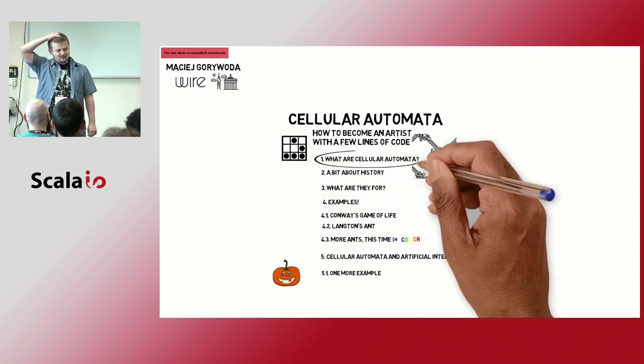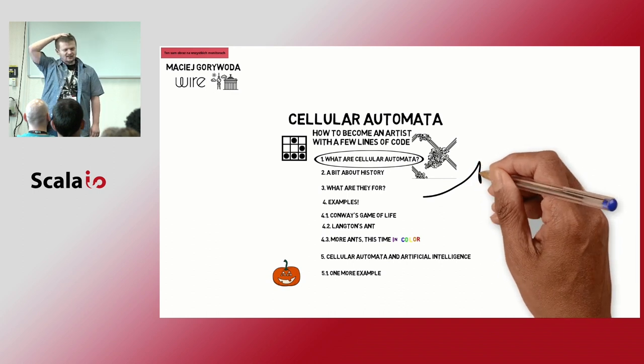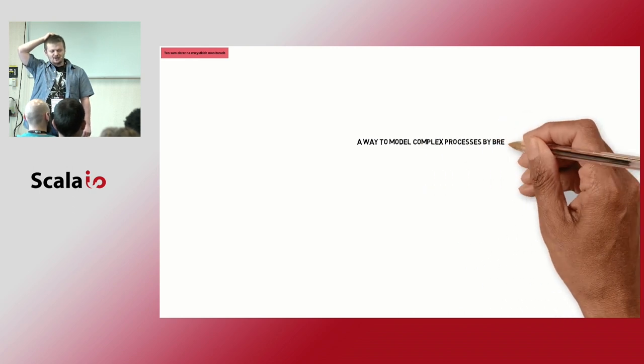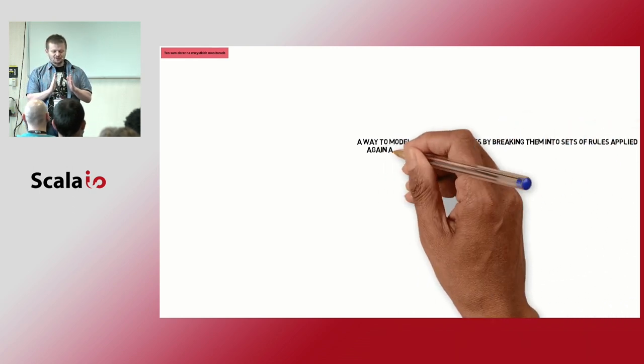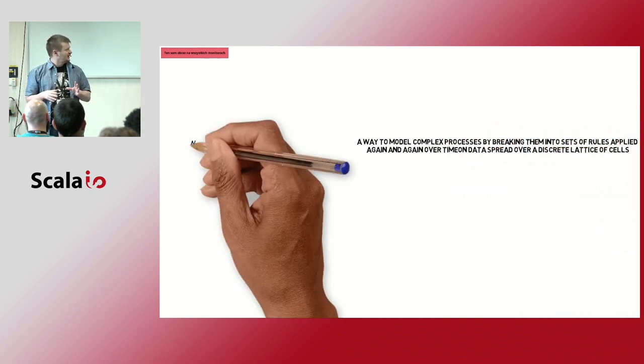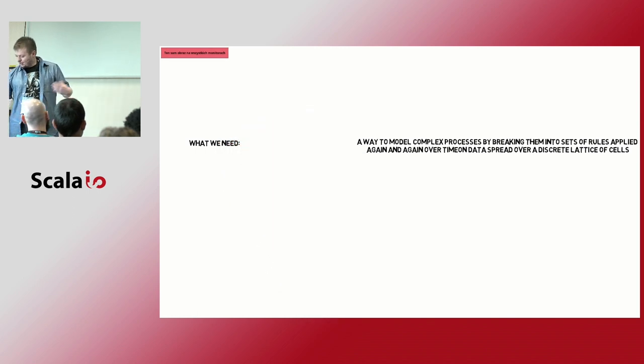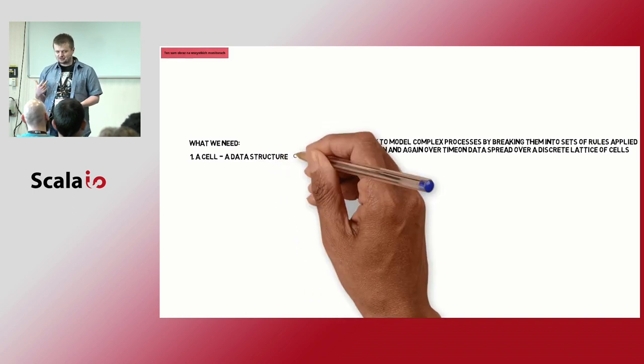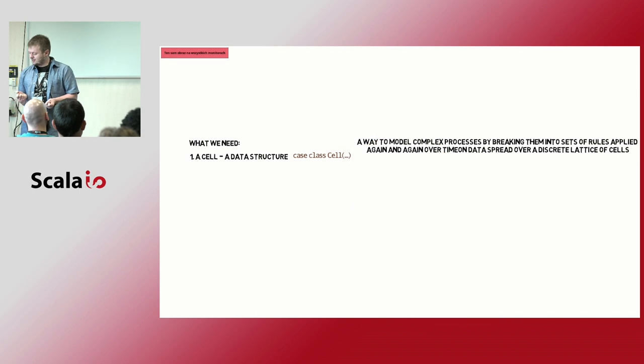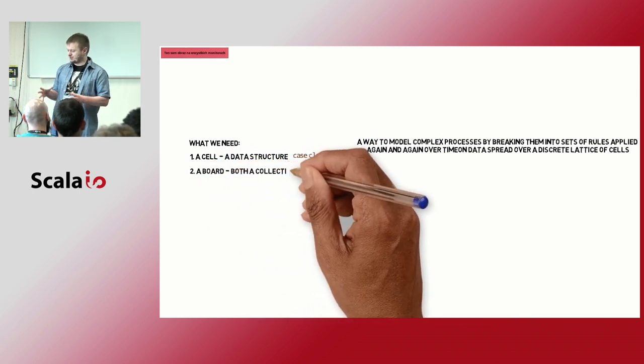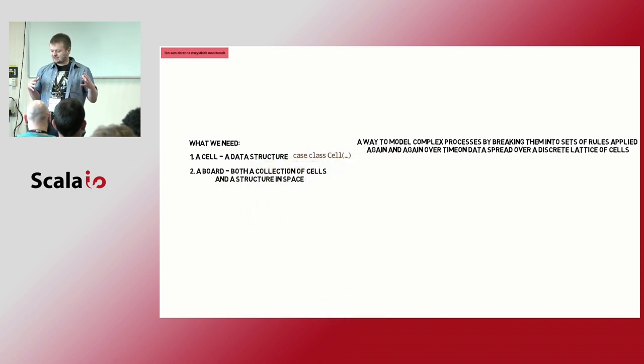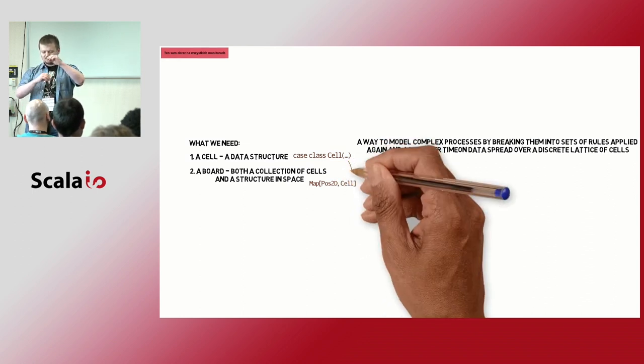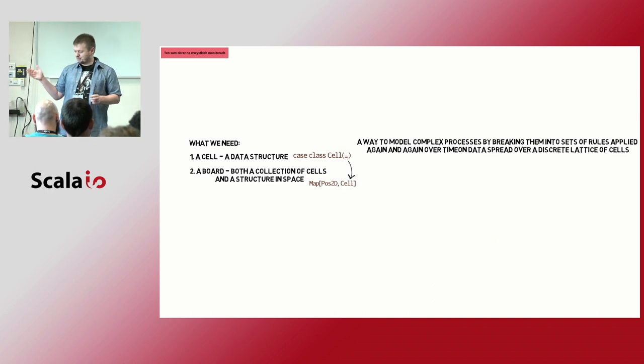So what are cellular automata? Risking some oversimplification, a cellular automaton is a way to model complex behaviors by making it into simple blocks of simple data and some simple rules, and then applying the rules all over again. To do that, we need just five things. We need a cell, some kind of data structure, and in Scala, that would be just a case class.